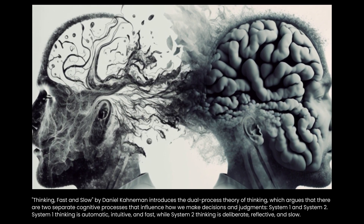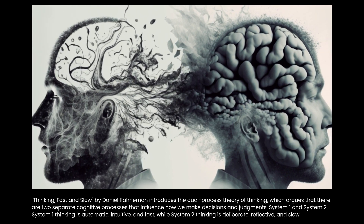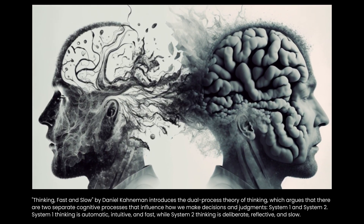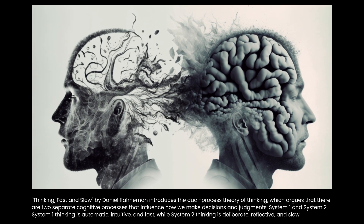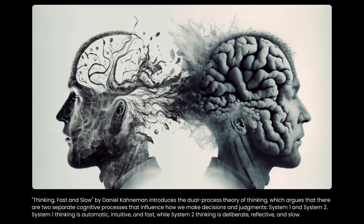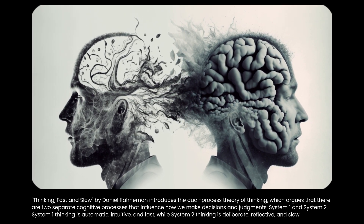System 1 thinking is automatic, intuitive, and fast, while System 2 thinking is deliberate, reflective, and slow.